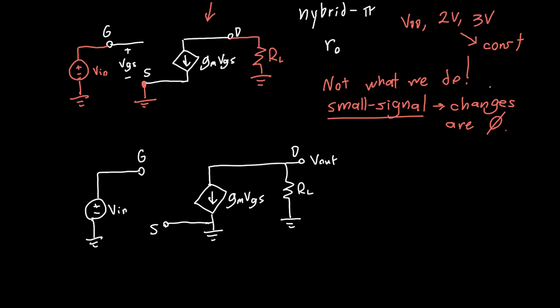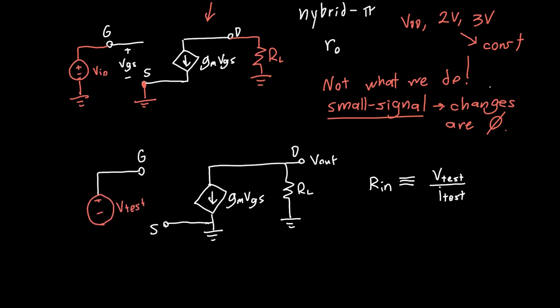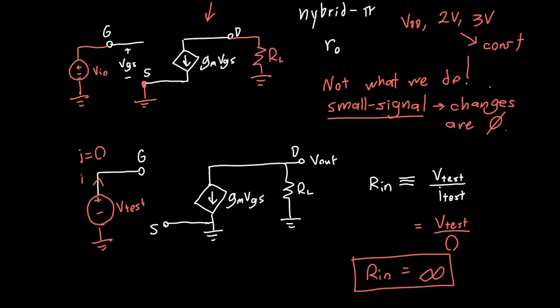Let's compute the three quantities. Starting with R_in: R_in is defined as a test voltage applied to the input divided by the resulting test current. When we apply a test voltage to the gate, the gate isn't connected to anything — there's nowhere for current to go — so the current is zero. R_in equals V_test over zero, which is infinity. The input resistance of a common source amplifier is infinite, which turns out to be very useful for a voltage amplifier.